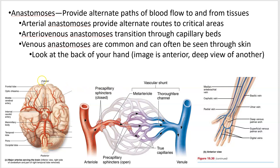Arterial anastomoses involve only arteries. This is your brain from the inferior view — you're looking at the bottom of your brain. Several large blood vessels come in here, and in lab you'll have to learn some of these that supply the structure called the Circle of Willis, which is kind of like a traffic circle. Blood can come in from many different ways and then go out to the brain through many different ways.